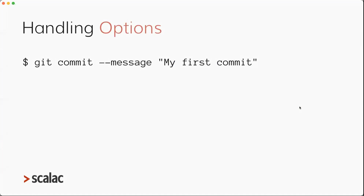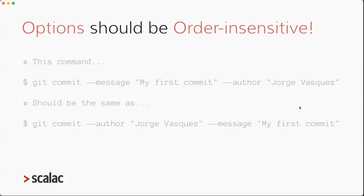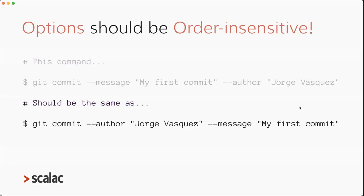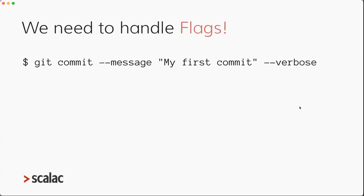When handling options — named command parameters — for example, here we have a message option in the Git CLI. We should consider that they must be order-insensitive. So providing a message option then an author option should be the same as first providing the author and then the message. We also need to handle flags — a special kind of option. They are also named, but like this verbose flag, we don't need to provide an explicit value. If you include the flag, the value is assumed to be true; if you don't, it's assumed to be false.